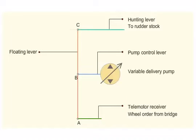One end of the floating lever is connected to the hunting lever and the other end is connected to the telemotor receiver. The pump control lever is connected to the middle of the floating lever. When the pump control lever is in B position, the pump will not discharge.